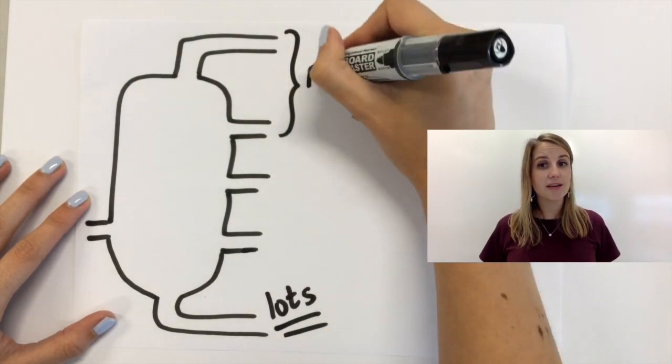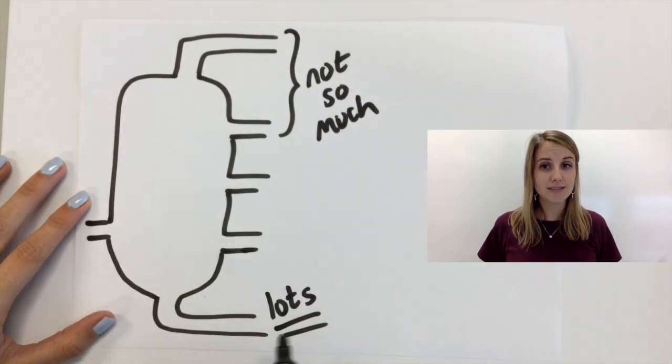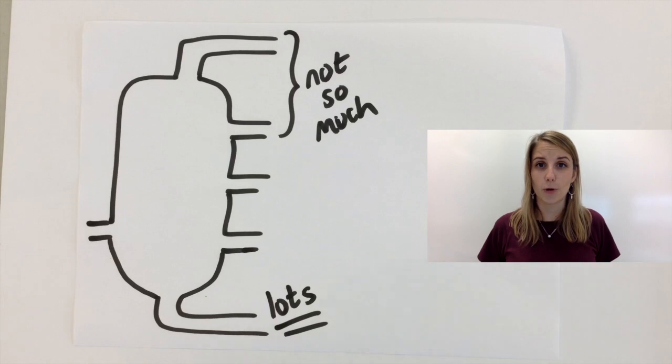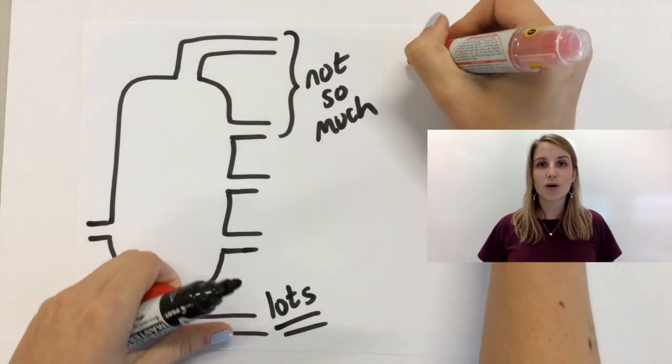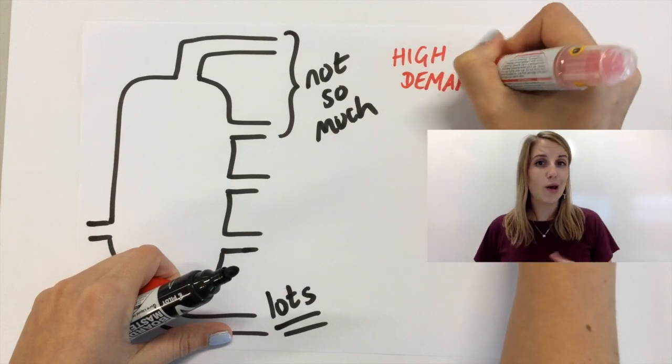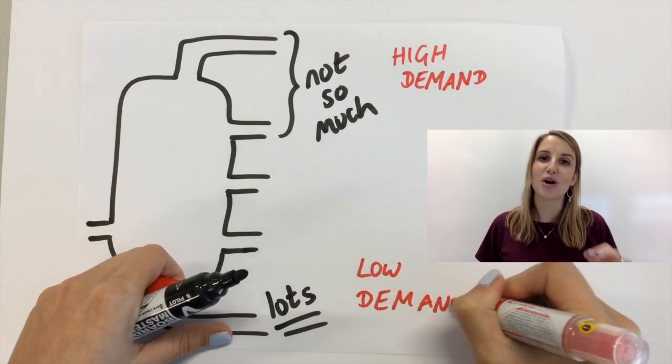Now this is a problem because the ones at the top are really in high demand and the ones at the bottom we don't have as many uses for. So cracking is a way for us to convert those low demand ones into the ones at the top that we want much more of.